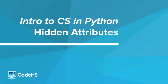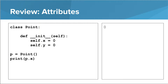In this video, we'll be talking about hidden attributes. So real quick, let's review what attributes are. Attributes are the values that a class keeps track of. In the point class example, we have two attributes, x and y. Every object of the point class gets its very own x attribute and its very own y attribute.